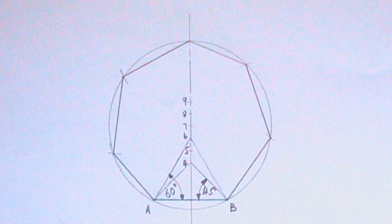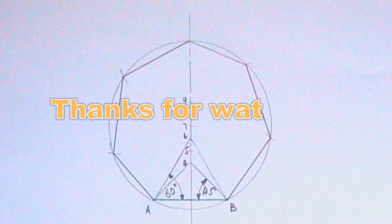You can always follow these steps to draw any given polygon. For example, if you want to draw a pentagon, you will place your compass on point 5 to draw the circle, because a pentagon has 5 sides.